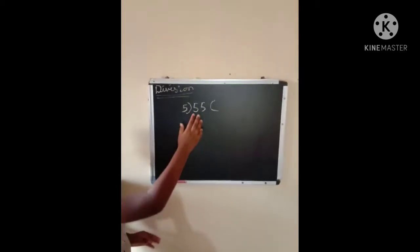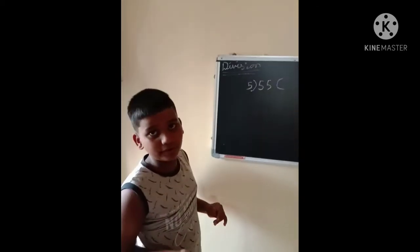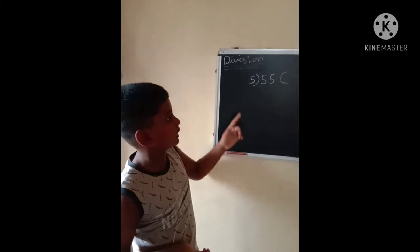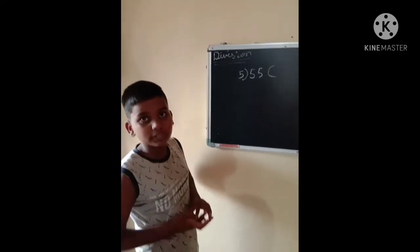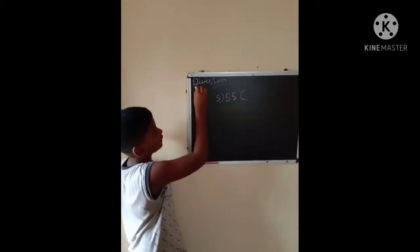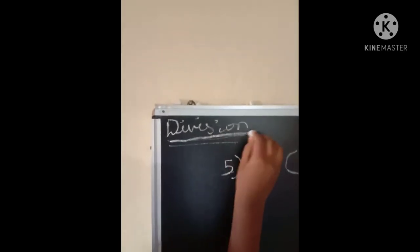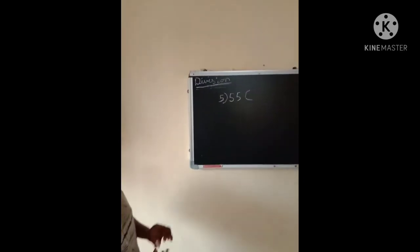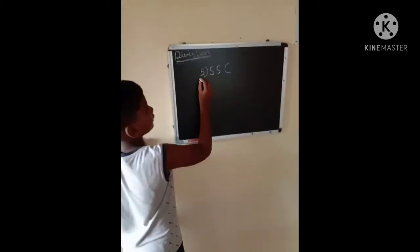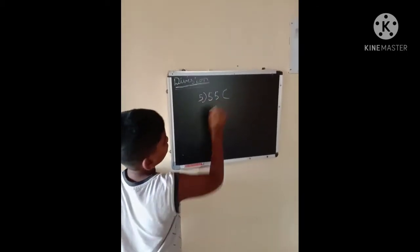I have 55 chocolates and I want to give to my five friends, so what should I do? I should do division. Okay guys, now let's do our sum. In five table, 55 will come.